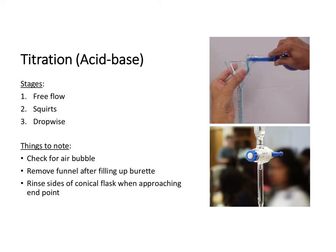When conducting a titration, first check for air bubbles when filling up the burette, because air bubbles cause inaccuracies in your titre value. To remove an air bubble, open the tap fully so the solution flushes the bubble out. In an extreme case where the bubble refuses to dislodge, bring the burette to the sink and give it a gentle shake so the bubble dislodges near the tap.